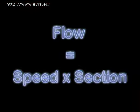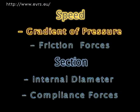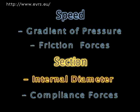The laws of physics remind us that the flow of fluid in a tube is equal to the displacement speed of this fluid by the internal surface of the tube. The speed of the fluid is determined by the difference in pressures, the only possible motor for carrying out a fluid displacement. Fluid speed is slowed down by the forces of friction, which depend on the internal roughness of the tubing walls and most of all on the viscosity of the fluid.